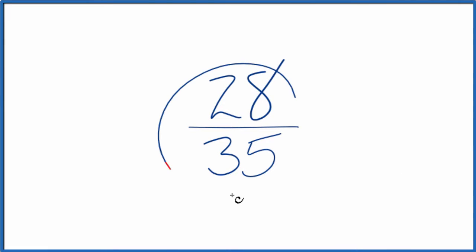Let's simplify the fraction 28 35ths. And what we're trying to do, we're trying to find another fraction that's equivalent, has the same value as 28 over 35, just that we've simplified it or put it in lowest terms.